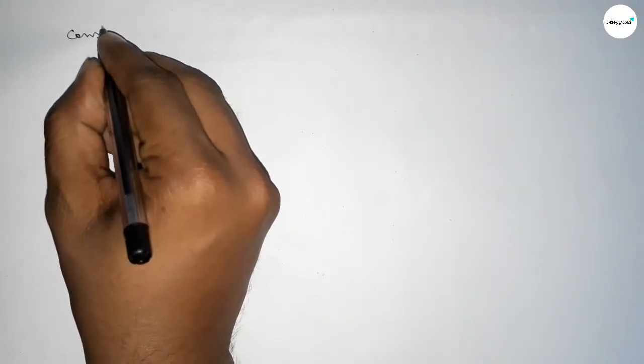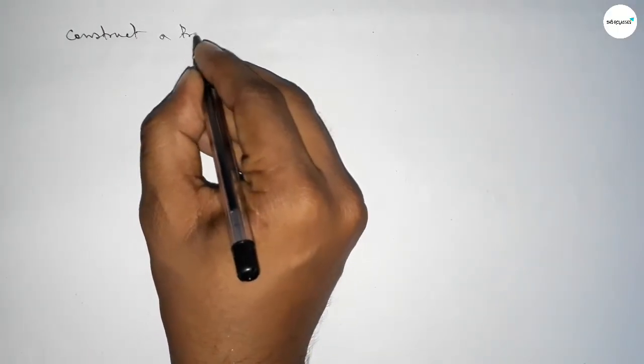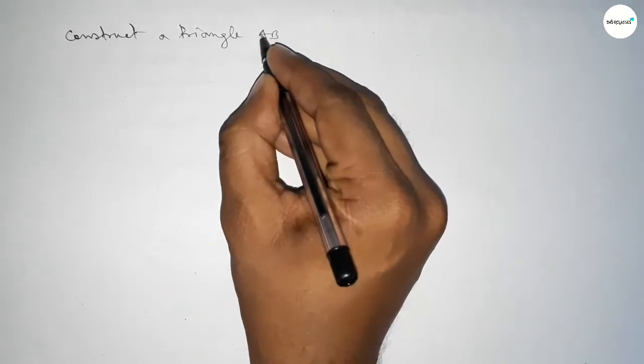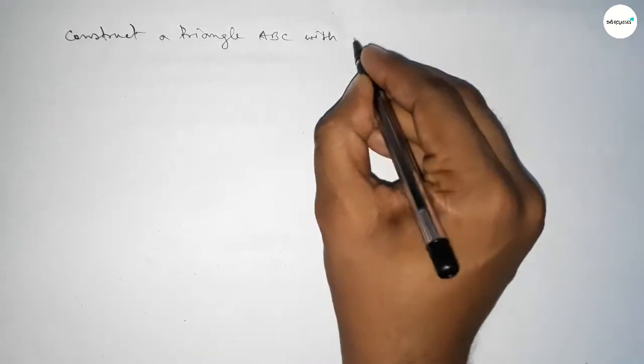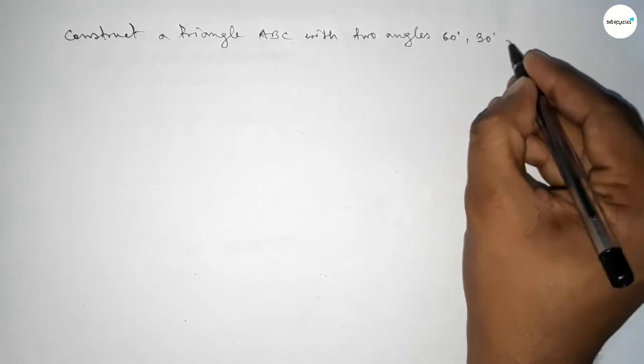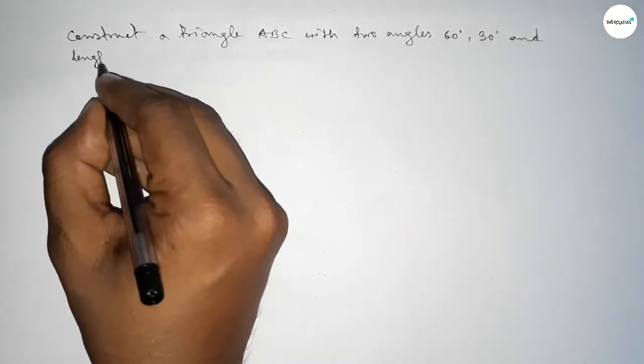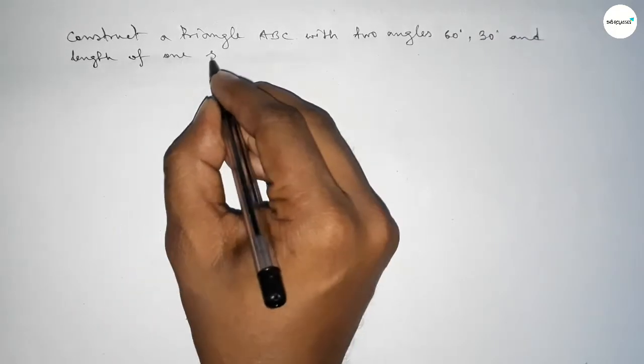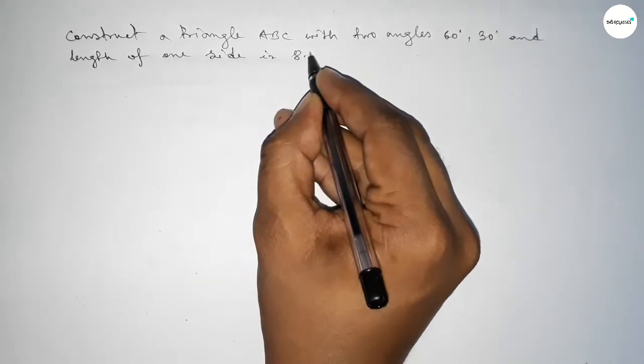Hi everyone, welcome to SI Share Classes. Today in this video we have to construct a triangle ABC with two angles, 60 degrees and 30 degrees, and given length of one side of the triangle is 8.5 centimeters. So let's start the video.